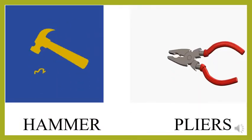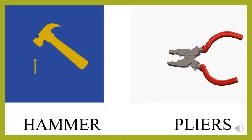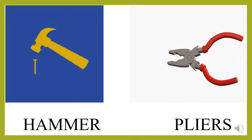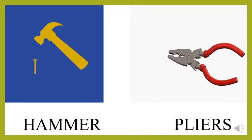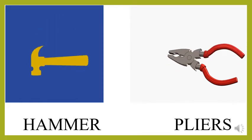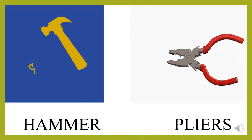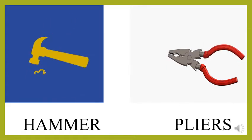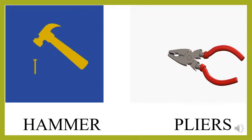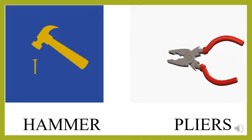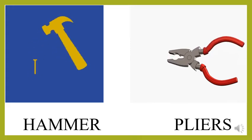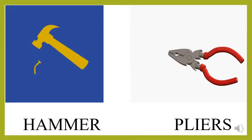So students, in this chapter we are going to learn about different types of tools. So what are tools? Tools are particularly important in construction work. They are primarily used to put things together or take them apart. Now in the slide you are seeing two tools — one is hammer, another one is pliers.